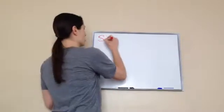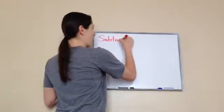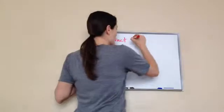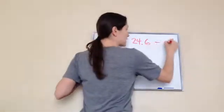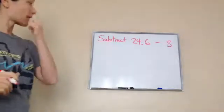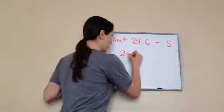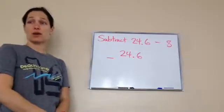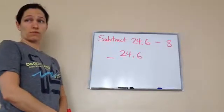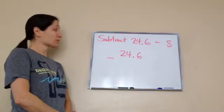Now, this one tells me to subtract 24.6 minus 8. So let's do this. 24.6 minus. Where is my 8 going to go? Under the 4. Under the 4. Why?